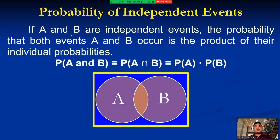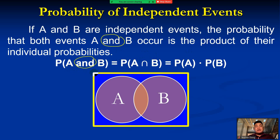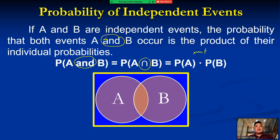Probability of independent events — what do we mean by that? If A and B are independent events, the probability that both events A and B occur is the product of their individual probabilities. In symbols, P(A and B) = P(A ∩ B) = P(A) × P(B). The word 'and' is the indicator that this falls under independent events, and the operation is multiplication.